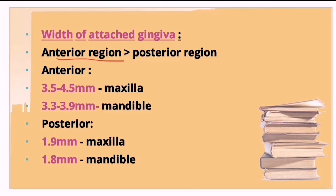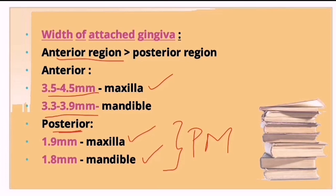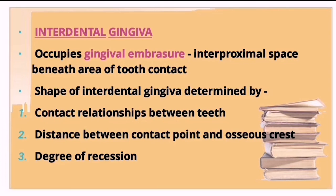In the maxilla, the width of attached gingiva is around 3.5 to 4.5 mm anteriorly, and in the mandible it is 3.3 to 3.9 mm anteriorly. Posteriorly, in the premolar region, it is only 1.9 mm in the maxilla and 1.8 mm in the mandible.